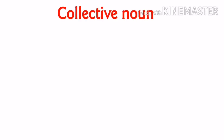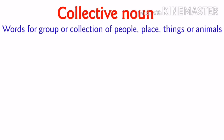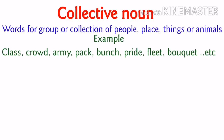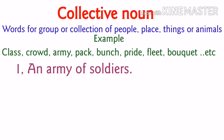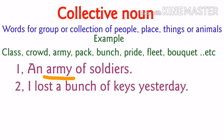Now let's see what is collective noun. Collective nouns are words for a group or collection of people, place, things or animals. For example: class, crowd, army, pack, bunch, pride, fleet, etc. Here we can see a collection or group of people or things. First sentence: an army of soldiers, which means a group of soldiers. Next sentence: I lost a bunch of keys yesterday — bunch means a collection of something, here a collection of keys. So it is called a bunch of keys.